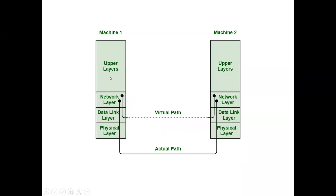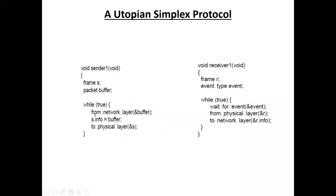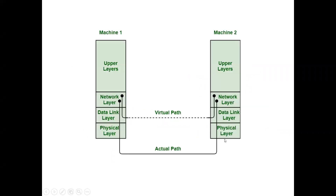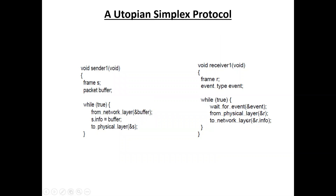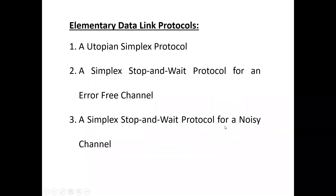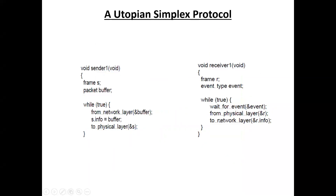In the utopian simplex protocol, the sender takes the packet from the network layer at the data link layer, that packet is framed, and then we send that frame to the physical layer. So at the sender: from network layer to physical layer. At the receiver: from physical layer to network layer. When the frame arrives at the physical layer, the receiver simply forwards it to the network layer. That is the utopian simplex protocol.